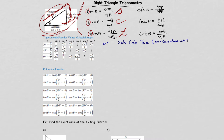Another thing you need to memorize is this chart for 30 degree, 45 degree, and 60 degree — or pi over 6, pi over 4, and pi over 3 — values of all six trig functions. One way is memorizing the chart; another way is memorizing the right triangles for those three angles, which is what I usually do.